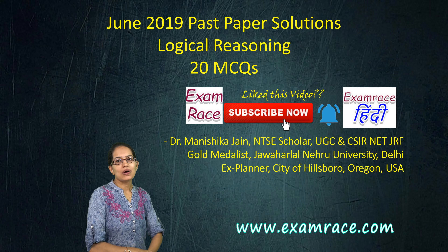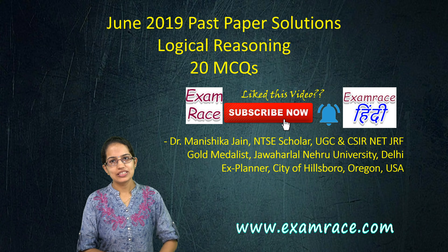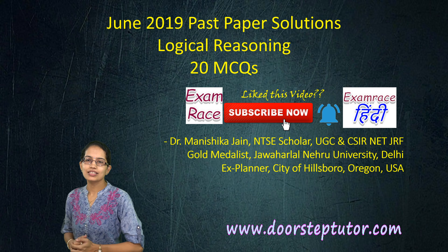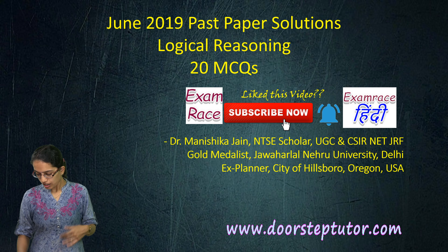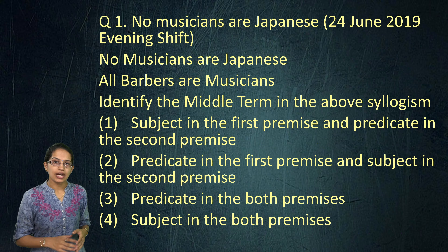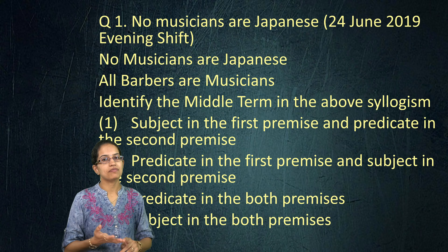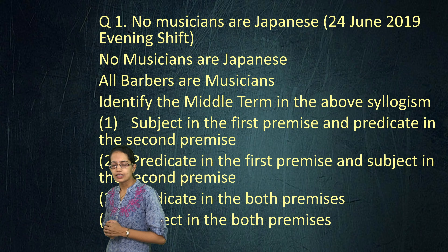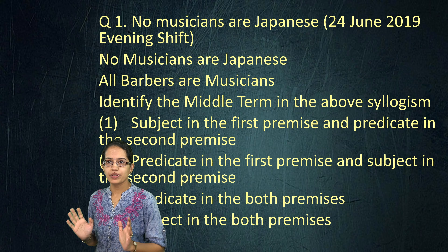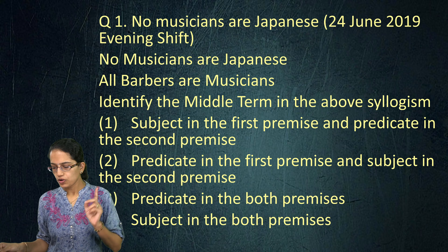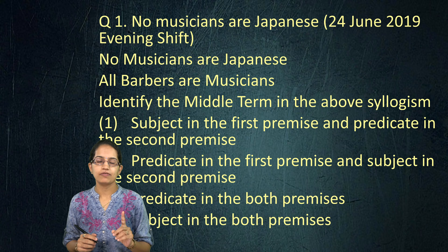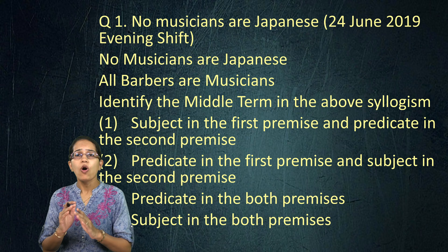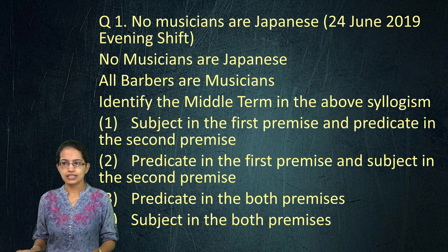Welcome. Today we would be talking about the logical reasoning section and we would be discussing the questions that were asked in the June 2019 paper. A lot of questions this time were from the philosophy section, and definitely square of opposition and logical syllogism, as always, have been part of your question paper. So if you have been working on the single diagram that we have been talking about for square of opposition, all your problems are resolved there and then itself.